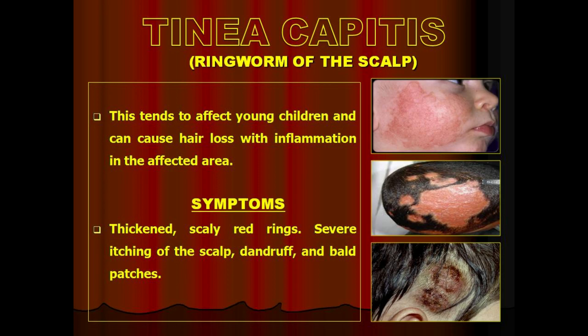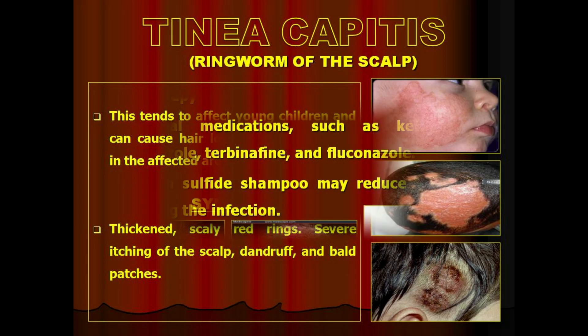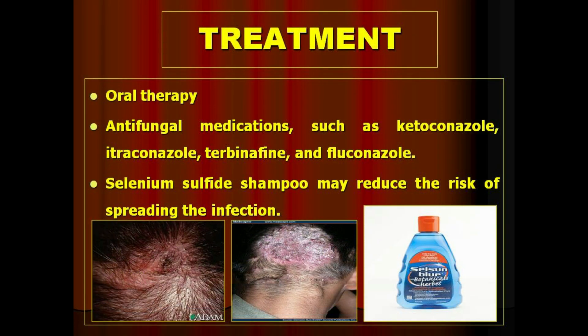Tinea capitis, also known as ringworm of the scalp, tends to affect young children and can cause hair loss with inflammation in the affected area. Symptoms include thickened scaly red rings, severe itching of the scalp, dandruff, and bald patches. It is treated with oral antifungal medicines such as ketoconazole, itraconazole, terbinafine, and fluconazole.